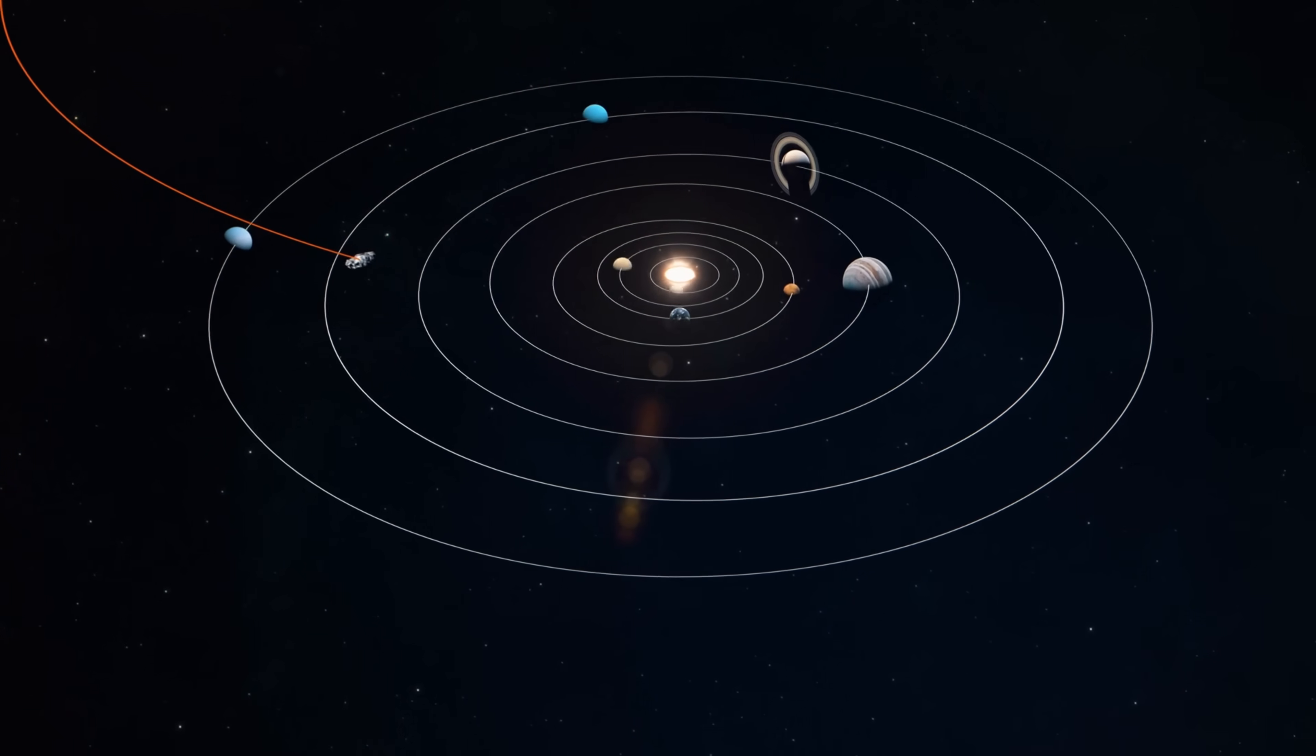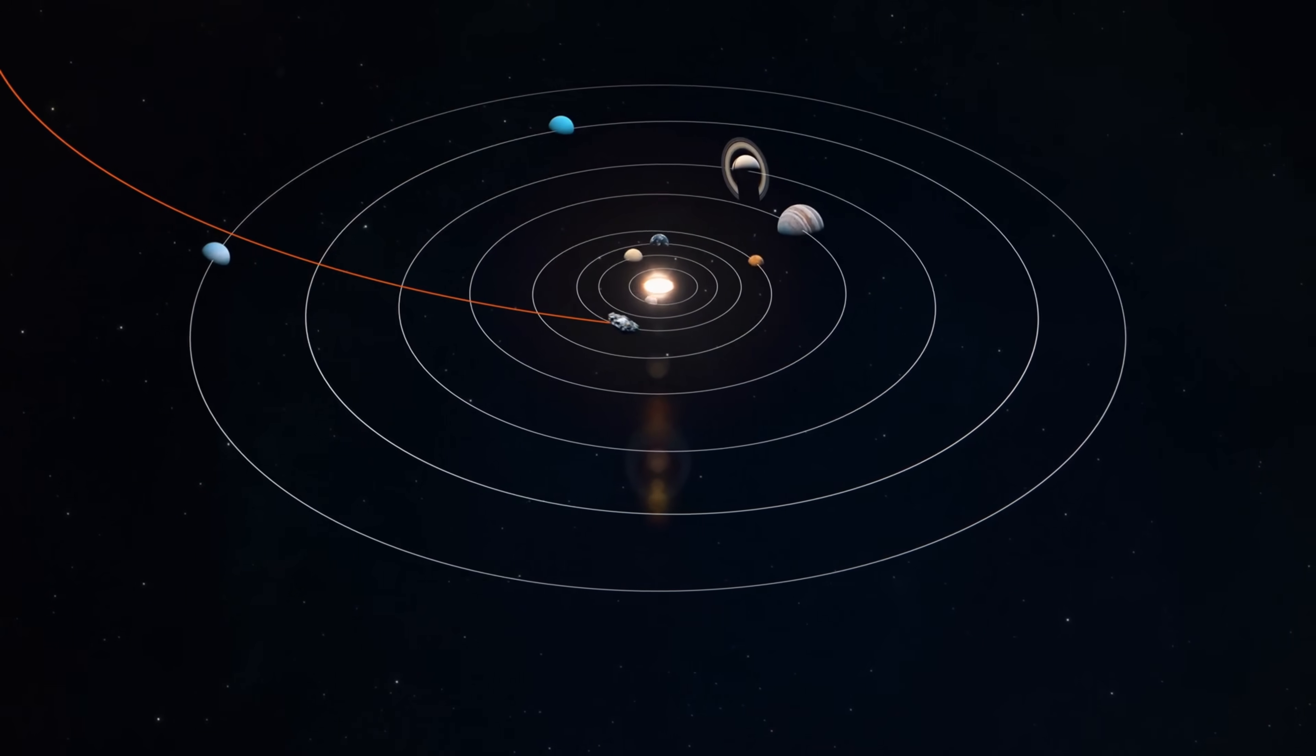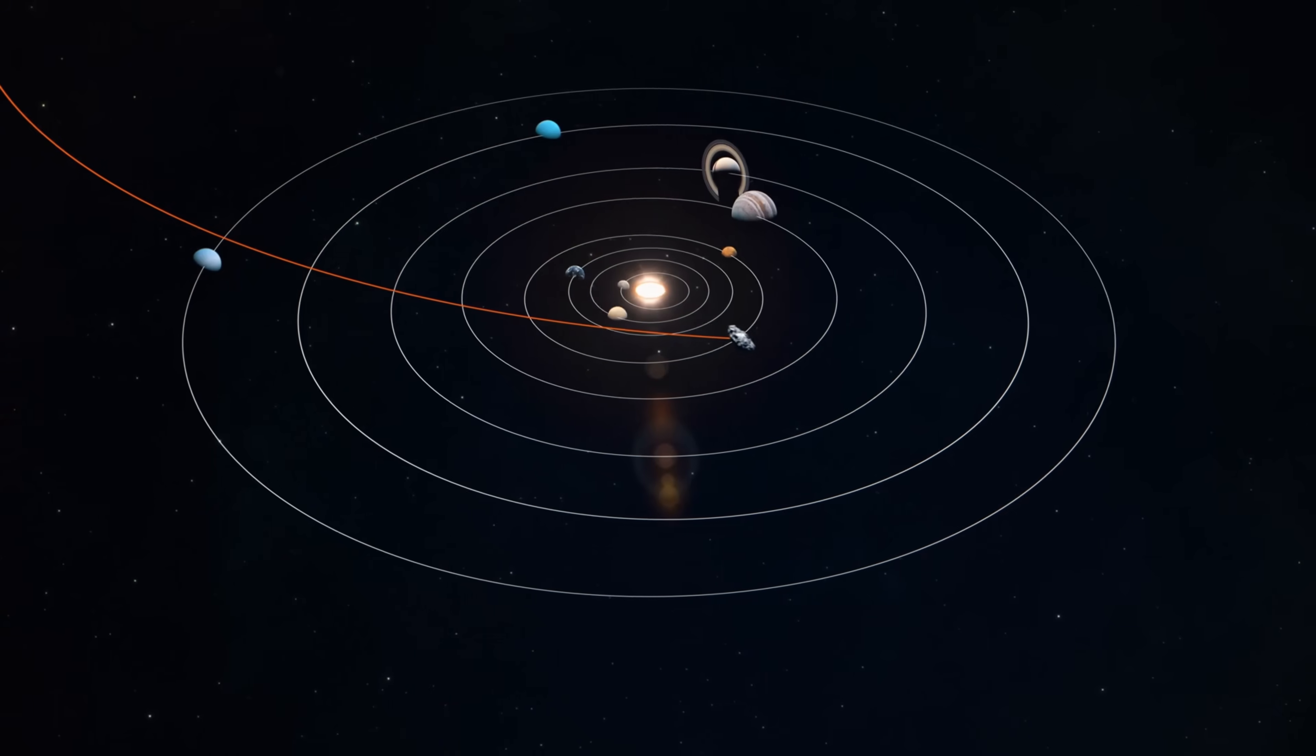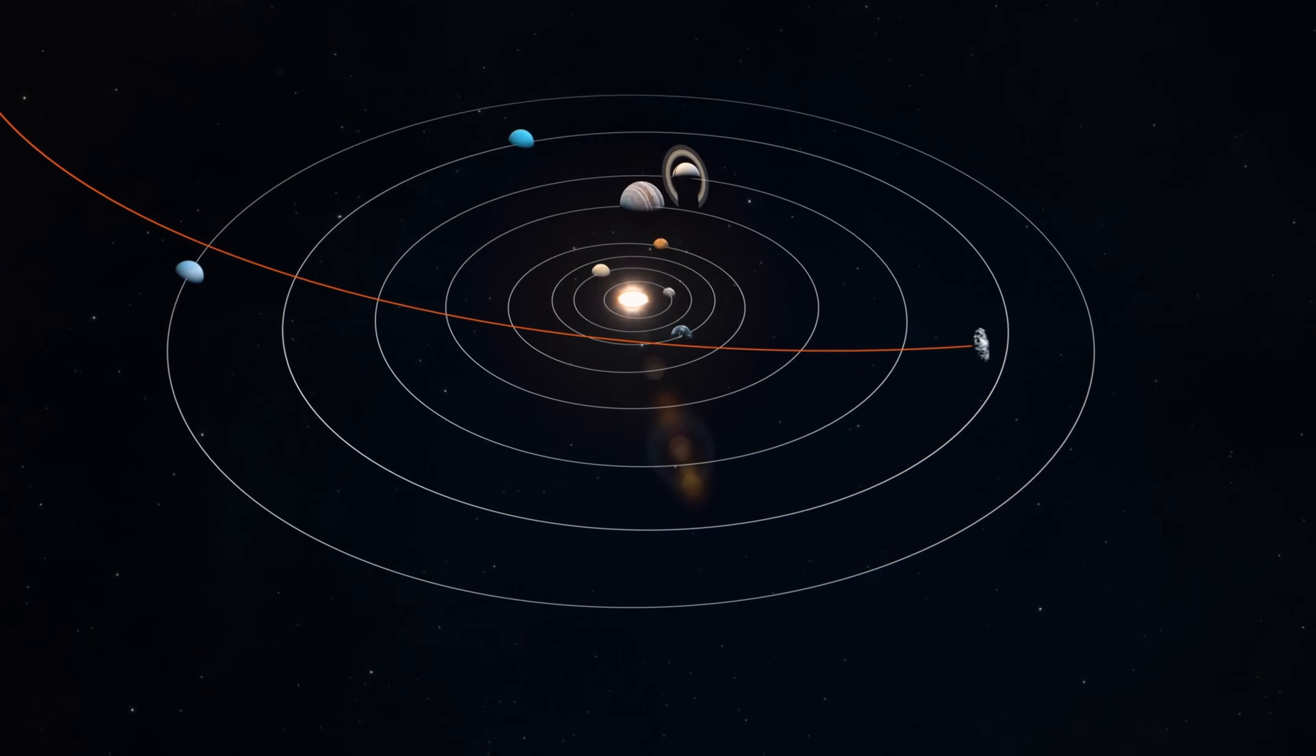3i Atlas does not possess the gravity to support objects in orbit. For fragments a kilometer or more across to linger near the nucleus, they would need either extremely low relative velocity or some form of external influence.